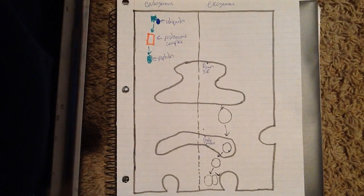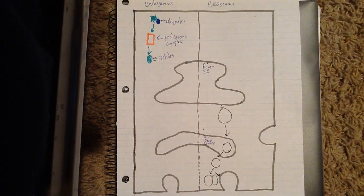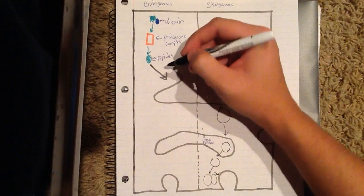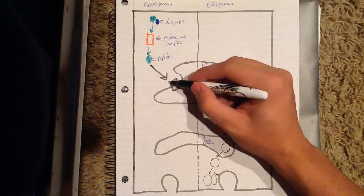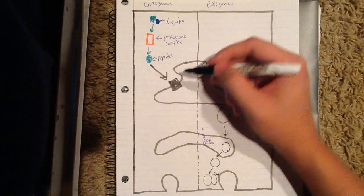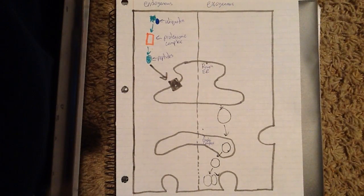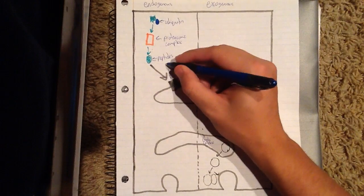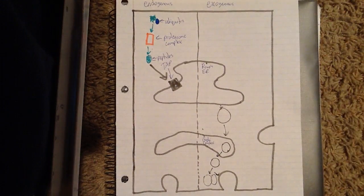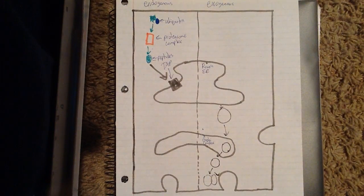This pathway is used to make peptides for presentation by the MHC class 1 molecules. Once the antigen passes through the proteasome and is broken down into smaller peptides, it's transported to the rough endoplasmic reticulum through a group of heterodimeric proteins called transporters associated with antigen processing, or TAP for short. These proteins help transport the peptides into the lumen of the ER so they can bind to MHC class 1 molecules.